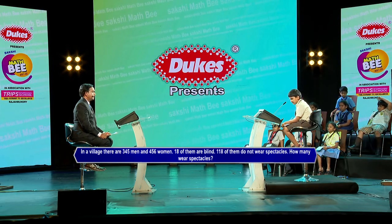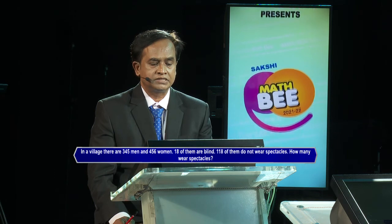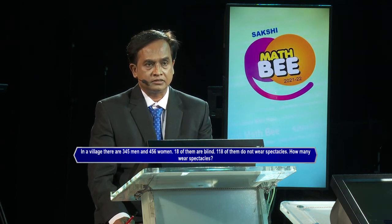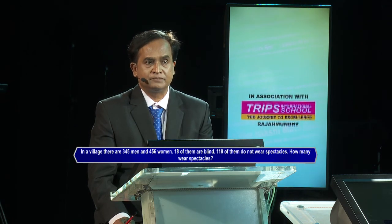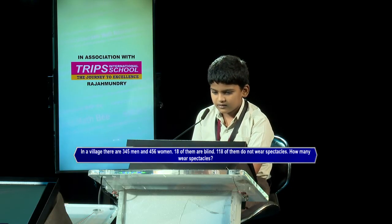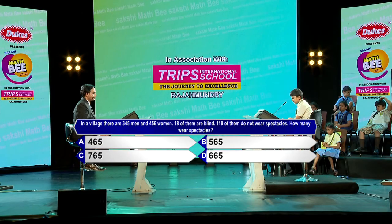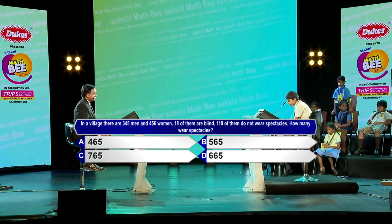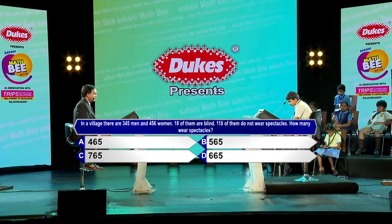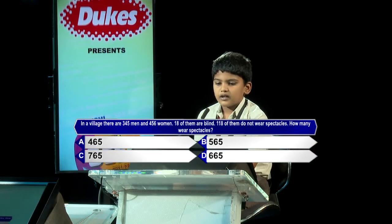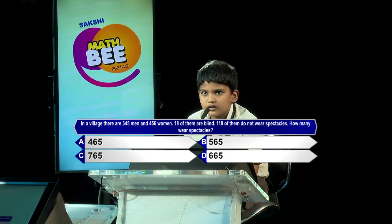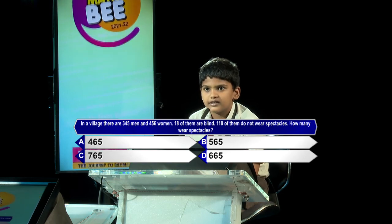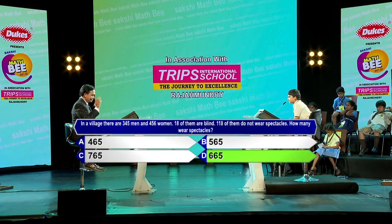Next question: In a village there are 345 men and 456 women; 18 of them are blind and 118 of them do not wear spectacles. How many wear spectacles? Options: A) 465, B) 565, C) ..., D) 665. Option D 665 — kindly lock option D 665. Brilliant, 665 is correct. Very good.